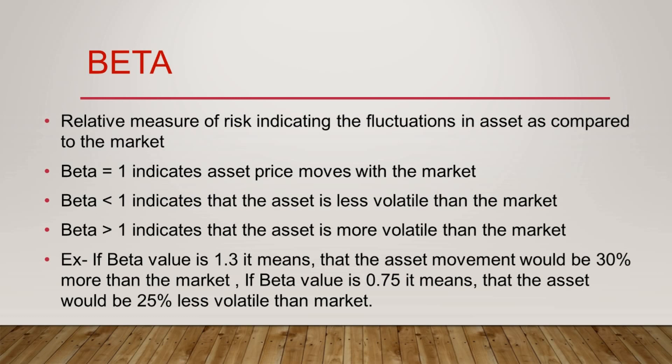Now talking about beta — beta is a relative measure of risk indicating the fluctuation in an asset as compared to the market. Standard deviation was illustrating the individual risk, the risk involved in that specific asset, whereas beta tells you the relative risk — the fluctuation of your asset as compared to the overall market risk.